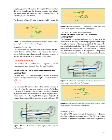Location of Datum: The location of the datum is not important, but all measurements must be made from the same location. Datum Forward of the Main Wheels — Tailwheel Landing Gear: Locating the CG of a tailwheel airplane is done in the same way as for a nose wheel airplane except the formula uses R × L / W. The distance D between the datum (figure 3-12) and the main gear weighing points is 7.5 inches. The weight of the tail wheel (R) is 67 pounds, the distance L between the main wheel and tail wheel weighing points is 222 inches, and the total weight (W) is 1,218 pounds. Using the formula in figure 3-13, the CG is 19.7 inches behind the datum.